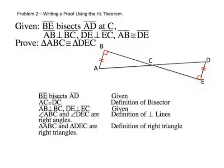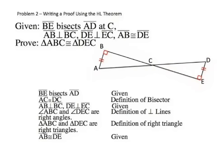Now, the definition of right triangles lets us state that triangle ABC and triangle DEC are right triangles. And we pull out that last piece of given information: segment AB is congruent to segment DE, because it's given.